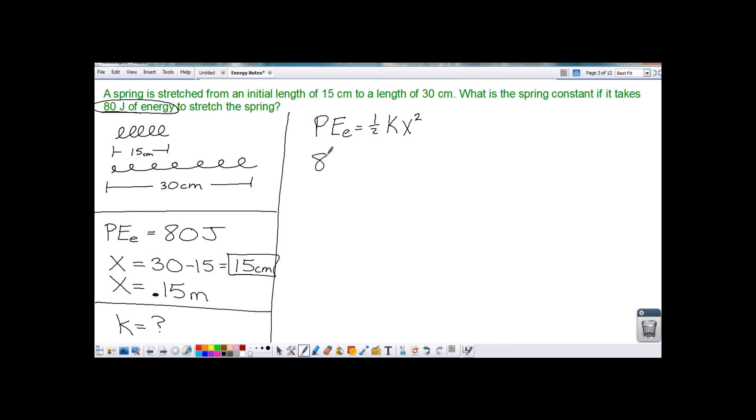Substitute in. 80 is equal to one-half, our spring constant, times our distance that is stretched. Well, it went from 15 to 30, so it got stretched 15 centimeters, squared. Go ahead and start solving. First, what I'm going to do is simplify the right-hand side. 0.15 squared is 0.0225. Then I'm going to go ahead and simplify some more. Half of that is 0.01125.